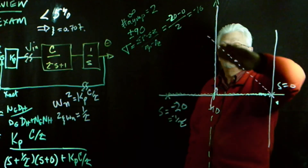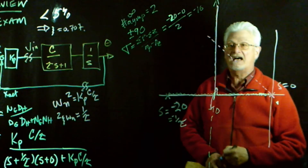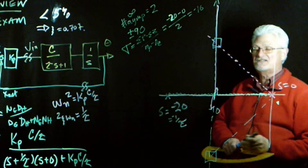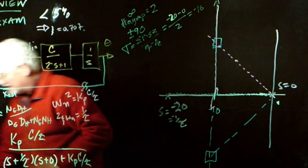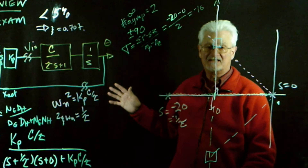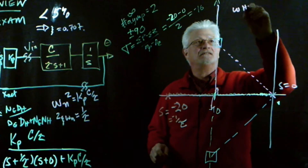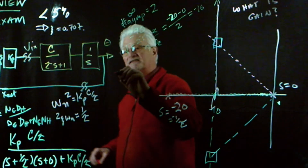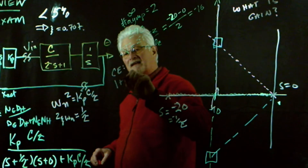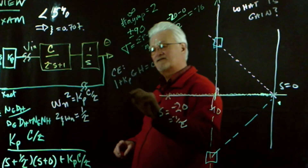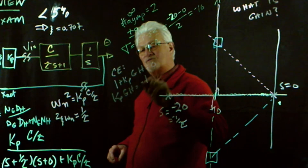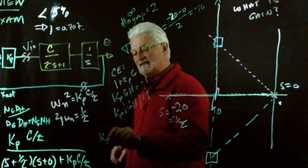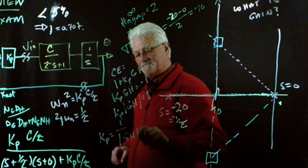Now we can designate the desired root locations. The only thing left to do is find out what the gain is. We can use the magnitude criterion: the characteristic equation is 1 plus Kp G H equals zero, so Kp G H equals minus one. That means the magnitude of Kp times G H equals one, so Kp equals one over the magnitude of G H.